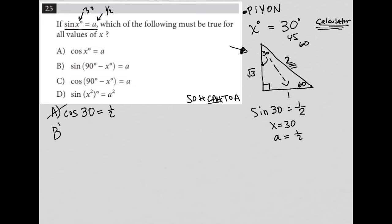How about answer choice B? Is it true that the sine of 90 minus x? Well, because x is 30, 90 minus 30 is 60. So is it true that sine of 60 is equal to 1 half? No, it's not. That would be root 3 over the hypotenuse, so root 3 over 2. So that's also not true. It's not equal to 1 half.